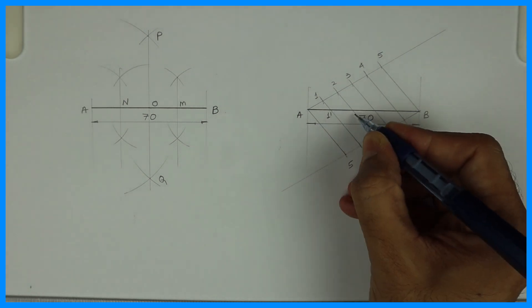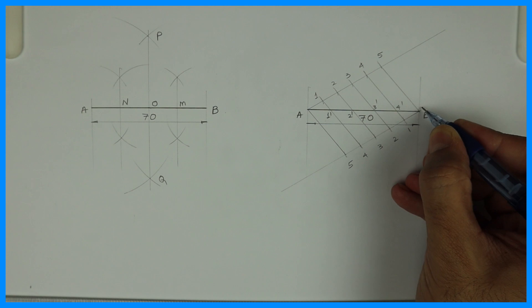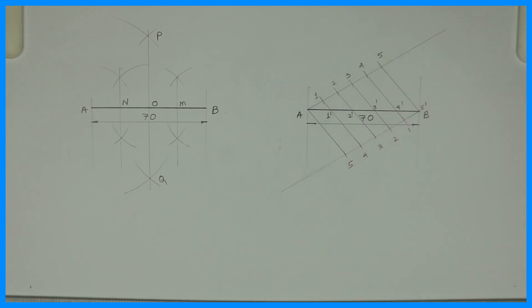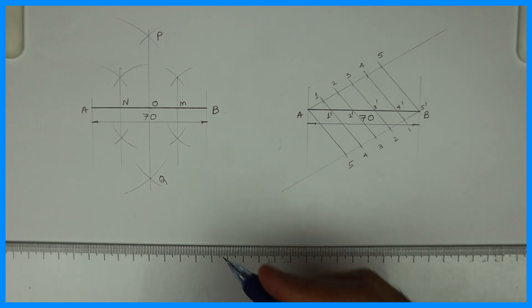I can follow the same method for 7 parts also, 6 parts also. So if you want to divide into 7 parts then you will take 7 arc up, 7 arc down. Now there is one shortcut method also in this. That also I will show you. How to divide line AB into 5 equal parts.